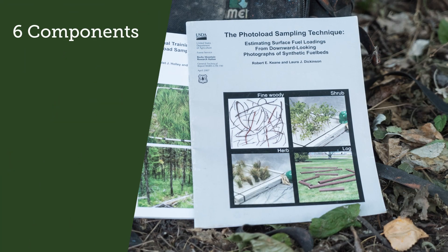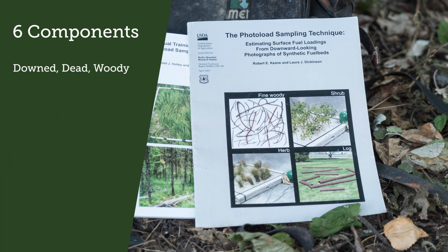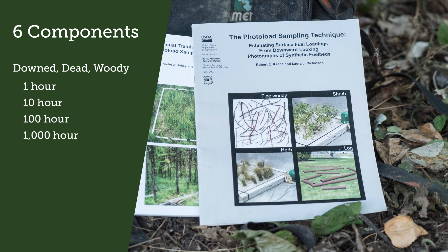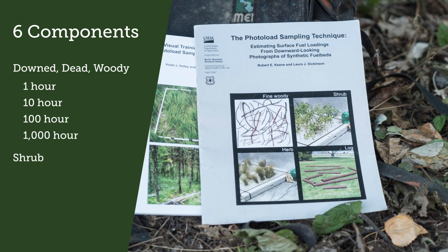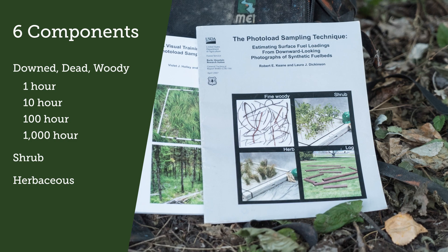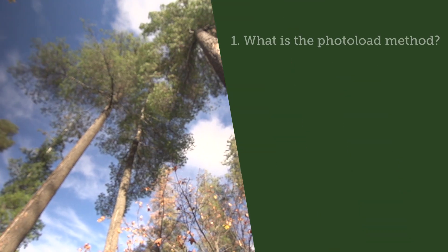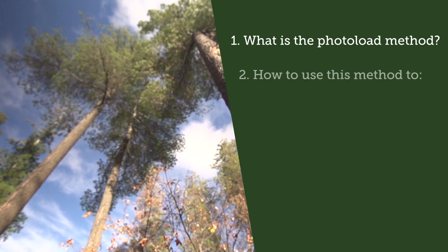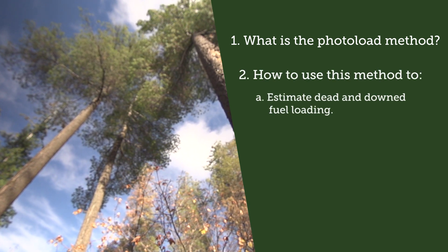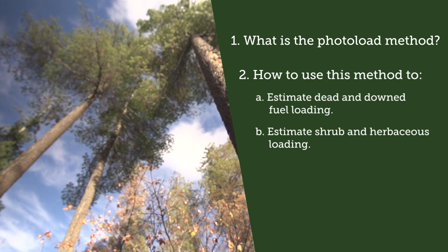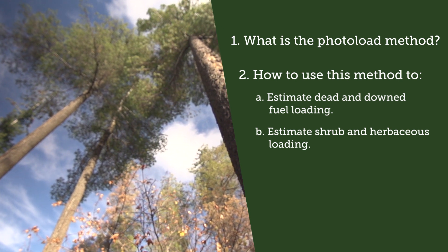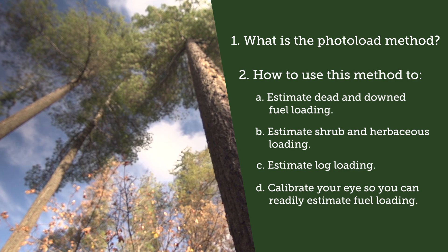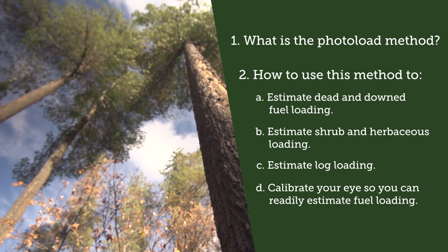The six components are the four size classes of downed dead woody — one-hour, ten-hour, hundred-hour, and thousand-hour — plus shrub and herbaceous fuels. In this video, you will learn what the photo load method is, how to use it to estimate dead and downed fuel loading, estimate shrub and herbaceous loading, estimate log loading, and calibrate your eye so you can readily estimate fuel loading.